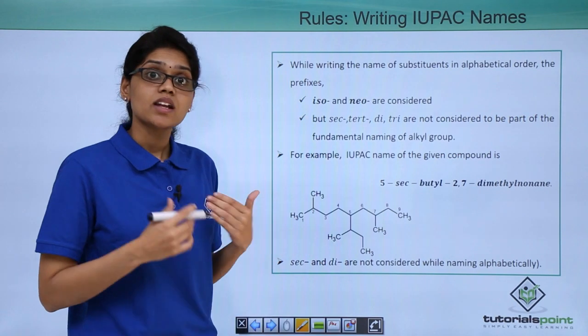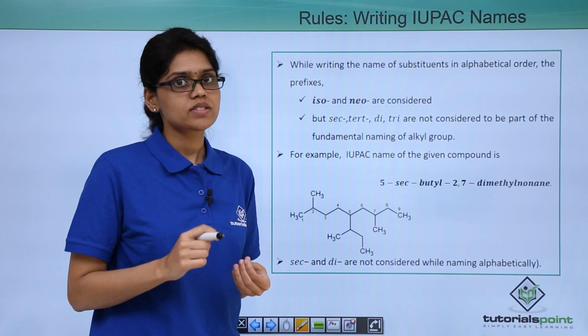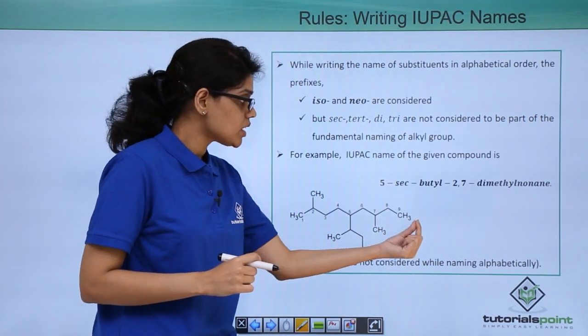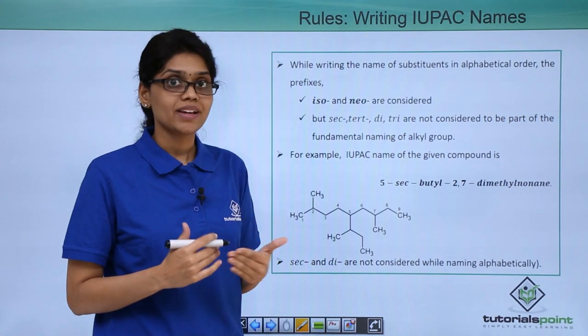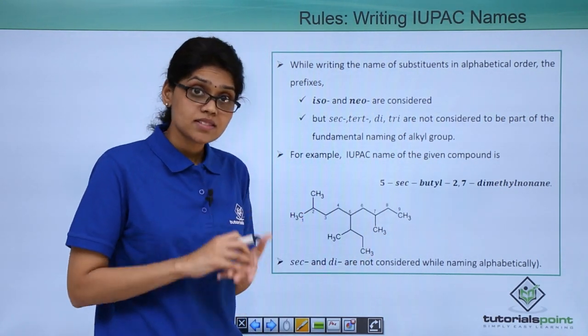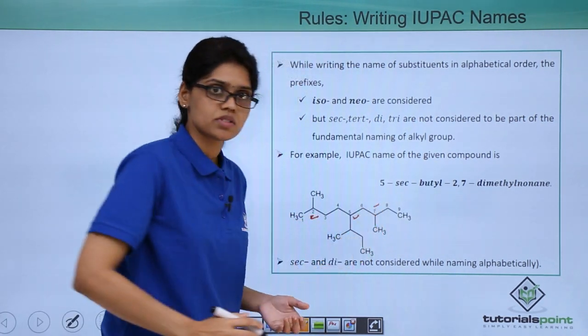You can see that the numbering is done from this side and not from this side because the branched carbon should get the lowest number. So here branched carbon will be at C2 position but if you number from this side branched carbon will be at C3 position. Hence this is the correct way of numbering and you can see that the substituents are at 2nd, 2, 5 and 7 position.